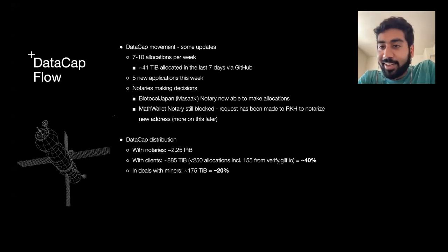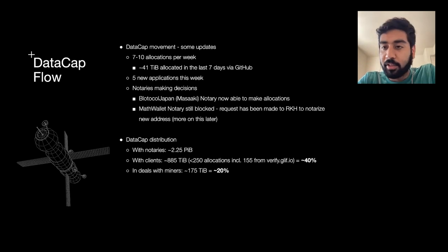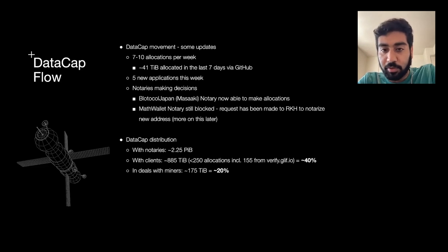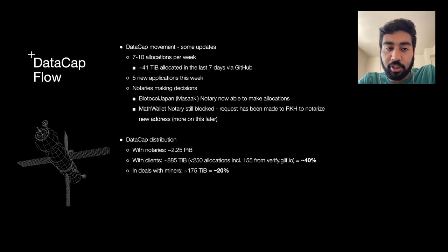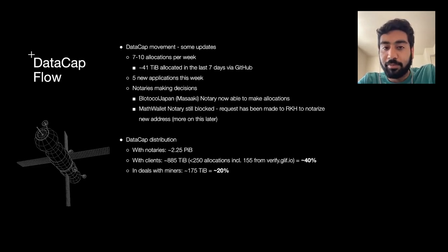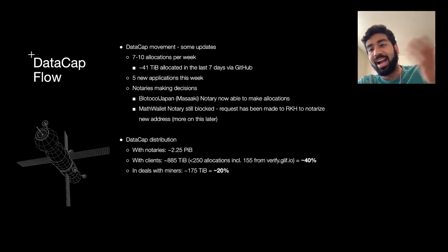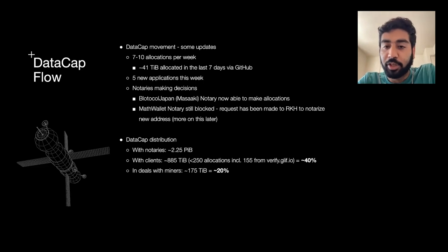So, exciting new topic. I'd like to make this a more regular discussion — every single call if possible — just generally: how is data cap flowing? It's become much more of a theme in the last couple of calls. For those of you who have been around, a lot of good topics and conversation have happened around time to data cap and data cap flow. I took a little bit of time to aggregate some of these metrics, and ideally this becomes a regular report that we can share and publish as we continue to learn and iterate on the processes in this program.